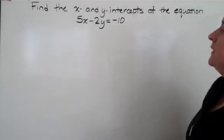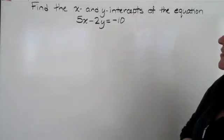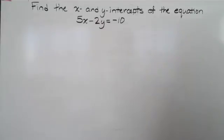Okay, for this problem, they're asking to find the x and y-intercepts for the equation 5x minus 2y equals negative 10.